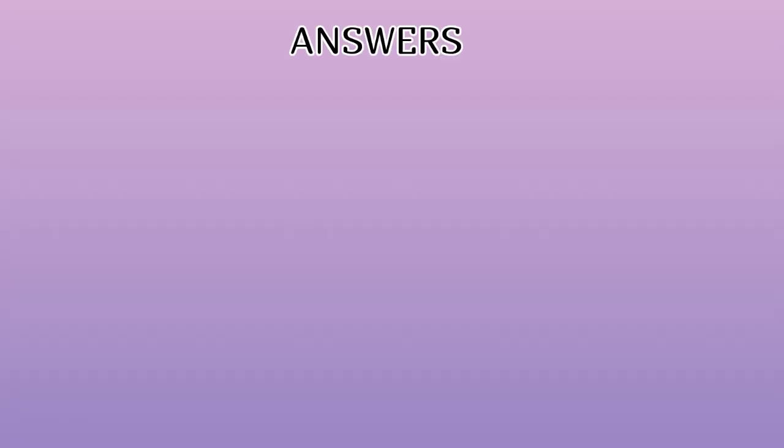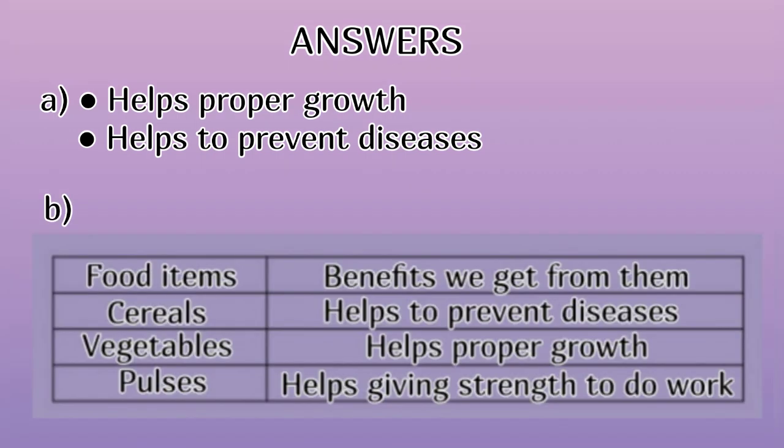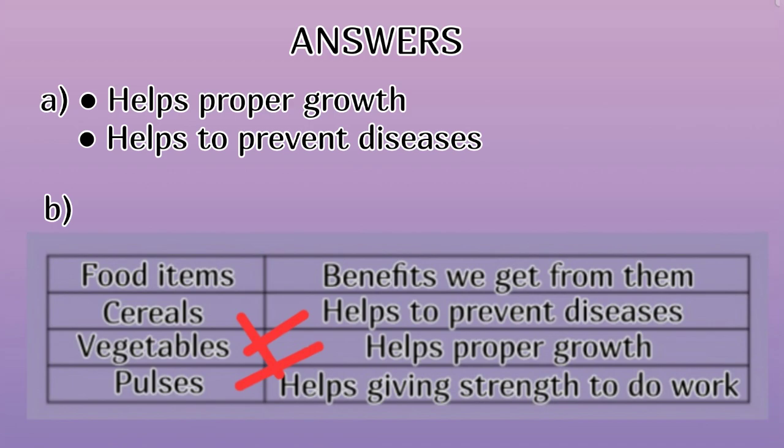Answers. A: They help to prevent diseases. B: Cereals — Helps giving strength to do work. Vegetables — Helps to prevent diseases. Pulses — Helps proper growth.